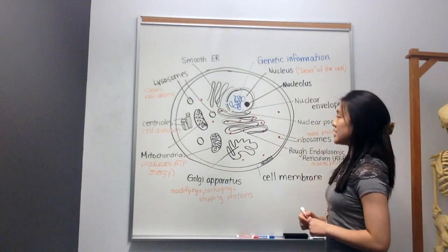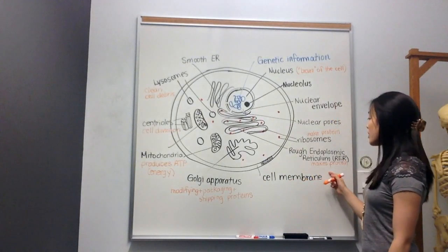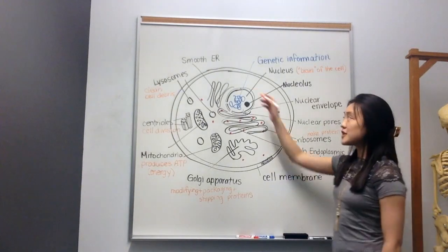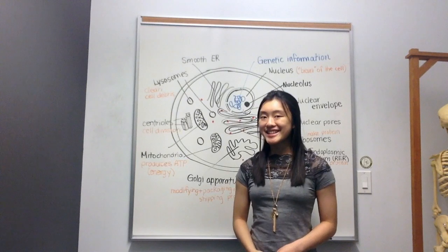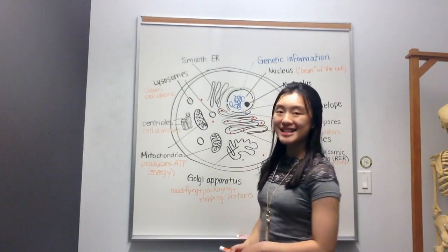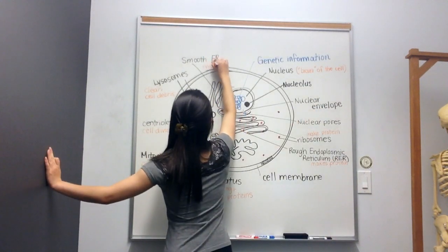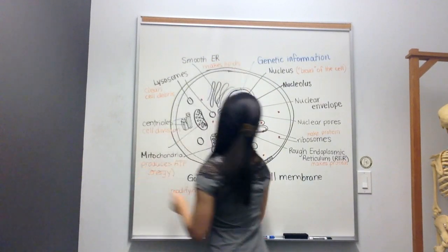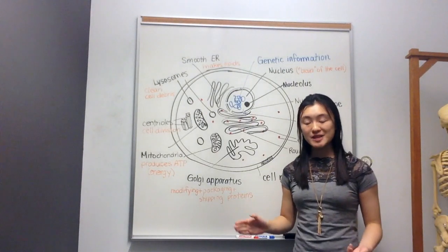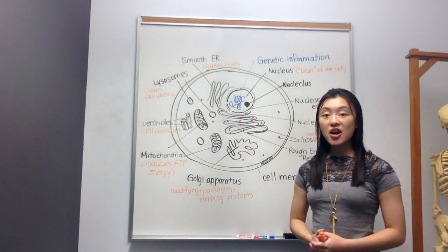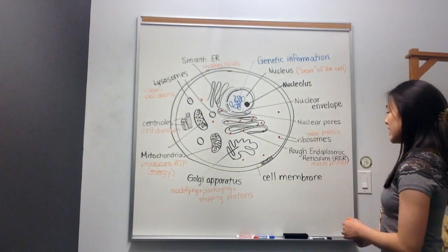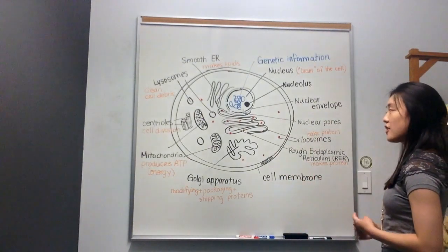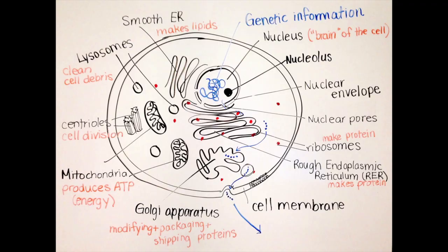As for the smooth ER, we can look back on the rough ER and note that the rough ER makes proteins. If the smooth ER is lacking ribosomes, which make proteins, the logical conclusion is that the smooth ER makes lipids. The smooth ER has a whole host of other responsibilities such as detoxifying the cells, and you can find a lot of the ER in actually the human liver. Taking a look at all of this, let's go on a pathway of what a protein would take as it's looping the cell.